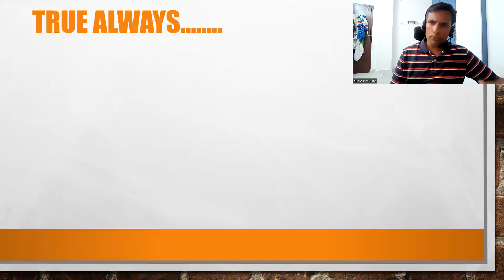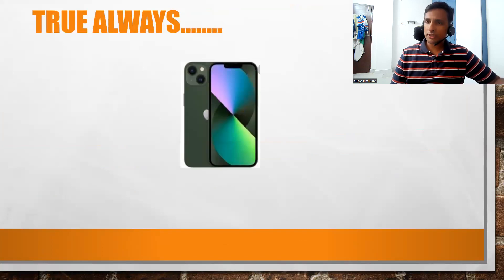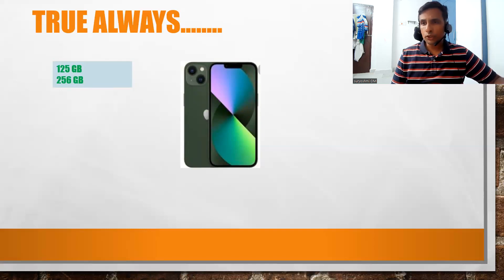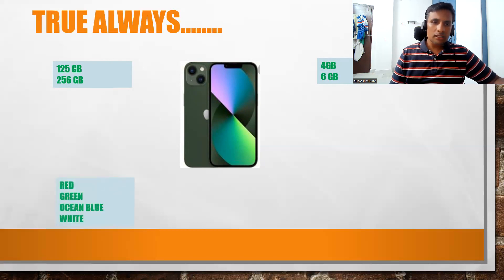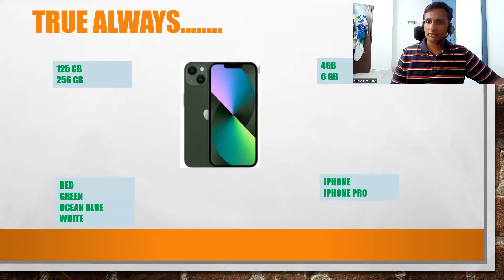Let me take this mobile as an example. I'm taking an iPhone and iPhone Pro. The variant is available in 128 GB and 256 GB storage, with 4 GB RAM and 6 GB RAM options. It is available in different colors — red, green, blue, and white. The brand differs between iPhone and iPhone Pro.